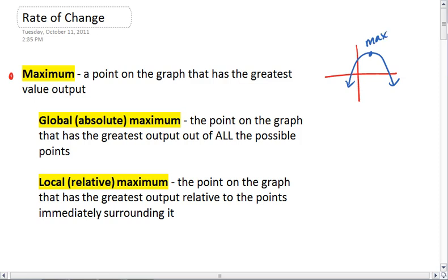There are two types of maximums we can have. We can have a global or absolute maximum, and that's the point on the graph that has the greatest output out of all the possible points.